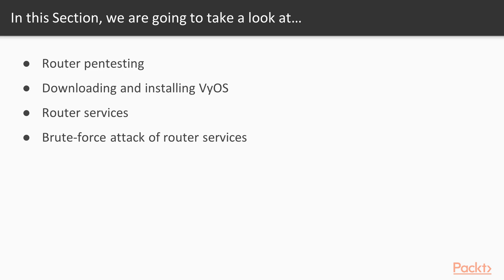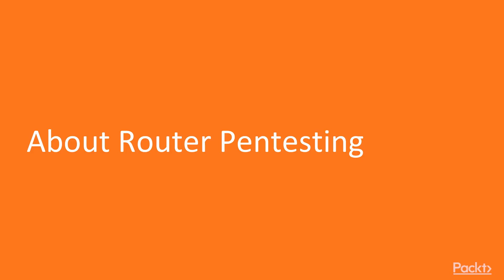Then we will learn how you can download and install Vios, which is a virtual router inside your VMware machine. Then how you can start the router services inside Vios, and finally how you can perform a brute force attack on router services — that is what we are going to cover. About router pentesting.